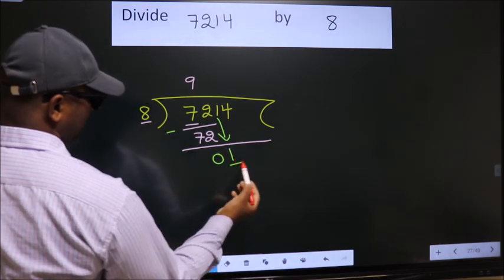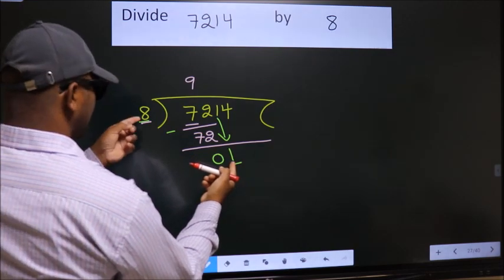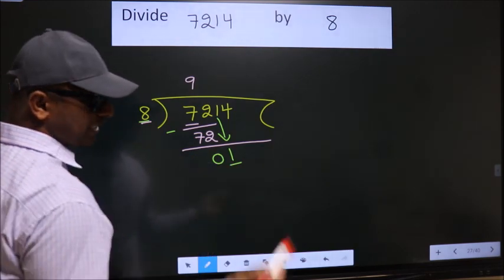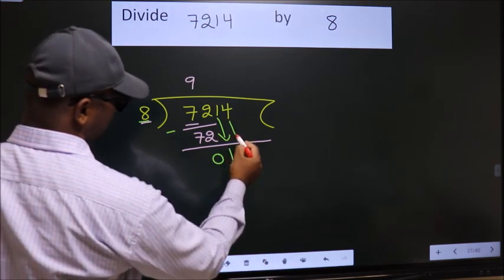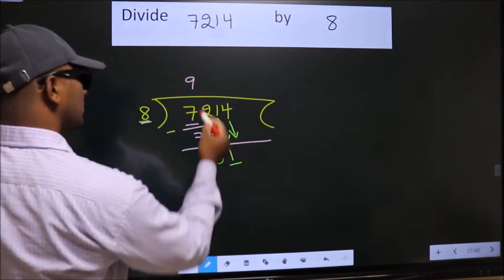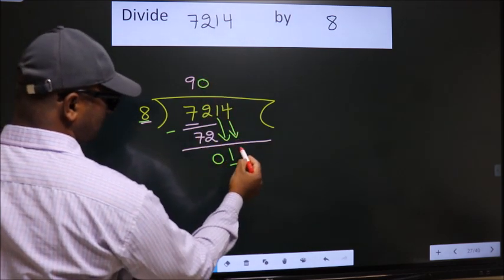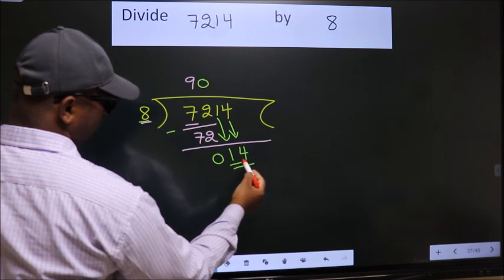Here we have 1, here 8. 1 is smaller than 8, so we should bring down the second number. And the rule to bring down the second number is put 0 here. Then only we can bring down this number. So, 14.